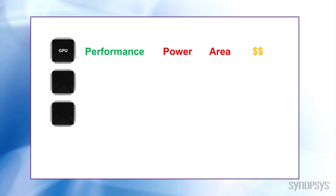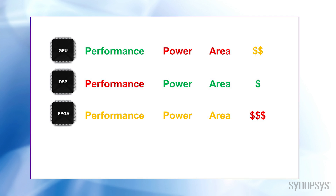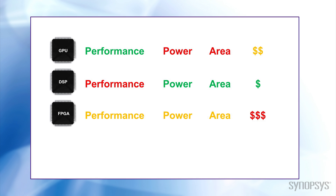There are other types of processors that can execute vision algorithms. GPUs have the math capabilities but consume a lot of power. Traditional DSPs lack the parallelism for video processing. FPGAs are great for prototyping but are generally slower and more expensive, so not an ideal choice for a high-volume embedded vision system. Only an embedded vision processor is optimized to handle the types of tasks required for high-performance embedded applications that are typically area and power constrained.